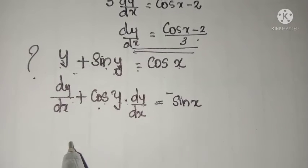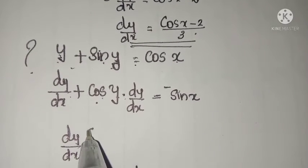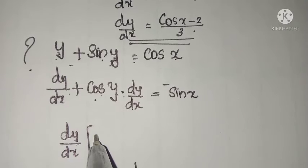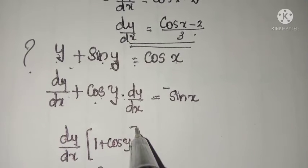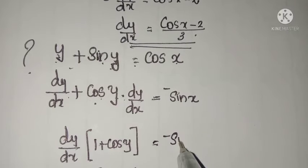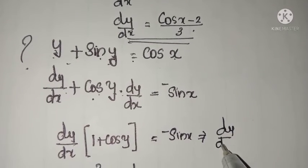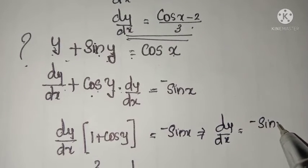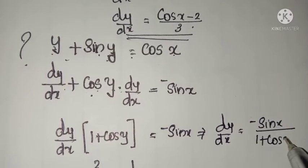In these two terms, dy by dx is common, so take it outside. So dy by dx into 1 plus cos y equals minus sin x, or dy by dx equals minus sin x divided by 1 plus cos y.